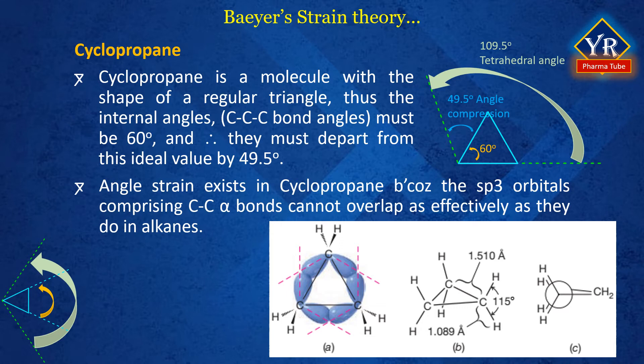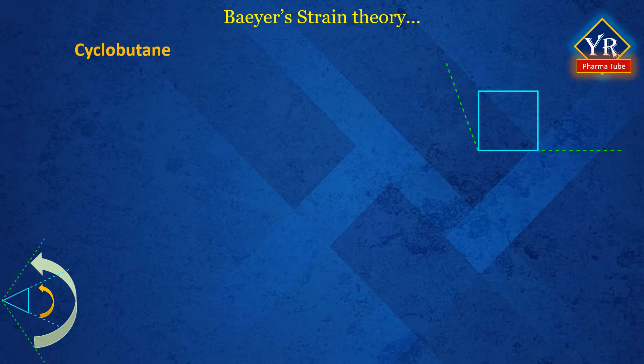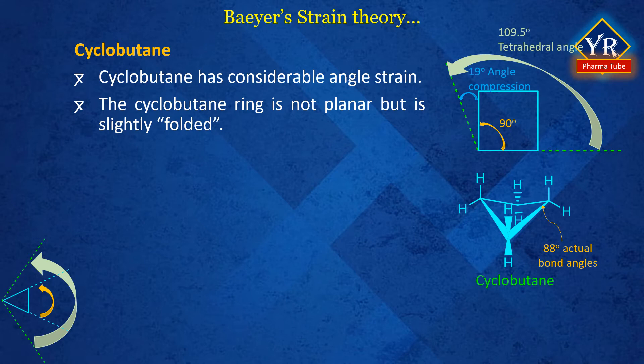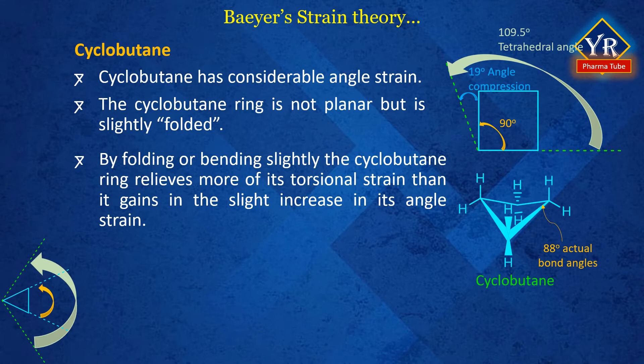Cyclobutane was expected to be a square planar structure with bond angles of 90 degrees, whereas the tetrahedral ideal is 109.5 degrees. However, it has considerable angle strain. The actual internal bond angles are 88 degrees, a departure of more than 21 degrees from the normal tetrahedral bond angle. The cyclobutane ring is not planar but is slightly folded. If the cyclobutane ring were planar, the angle strain would be somewhat less — the internal angles would be 90 degrees instead of 88 degrees — but torsional strain would be considerably larger because all eight C–H bonds would be eclipsed. By folding slightly, the cyclobutane ring relieves more of its torsional strain than it gains in the slight increase in angle strain.